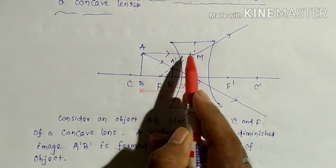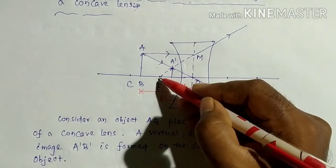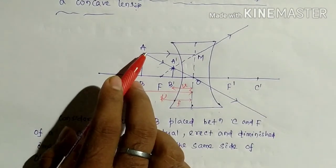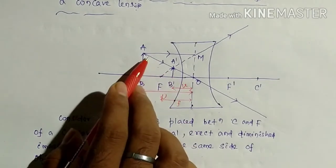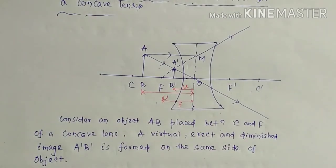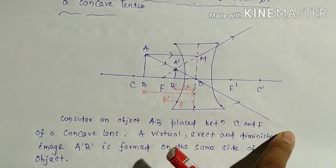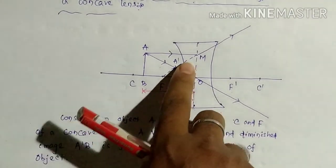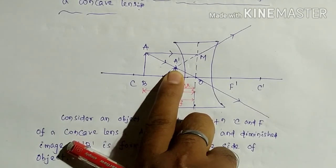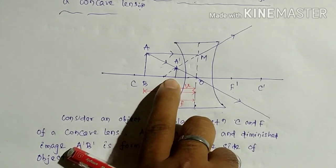After refraction through the lens, this parallel ray seems to be coming out from the focus. The second ray passes through the optical center and passes undeviated. These two rays intersect at a point, and drawing a perpendicular from that point to the principal axis gives the foot of the image, which is A'B'.